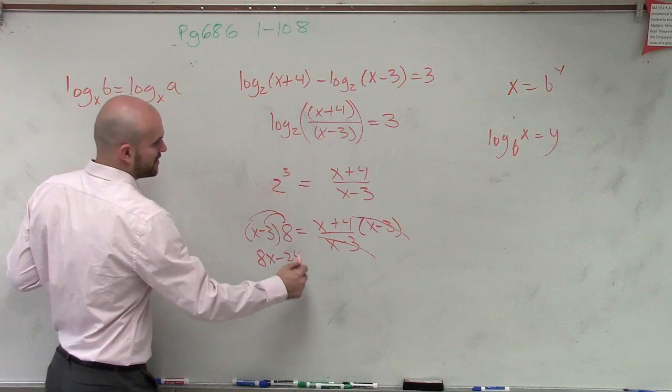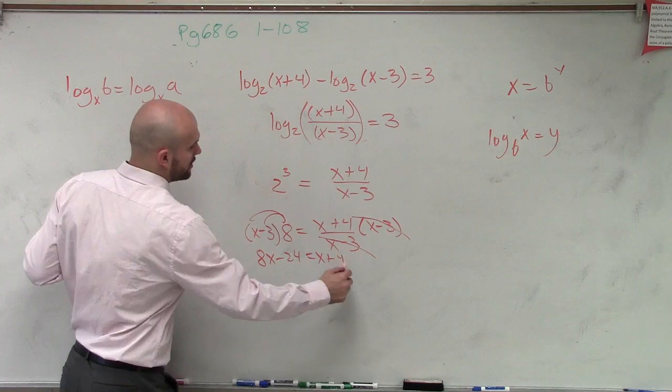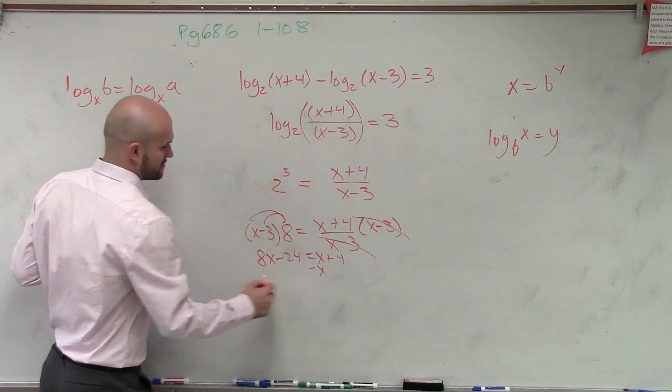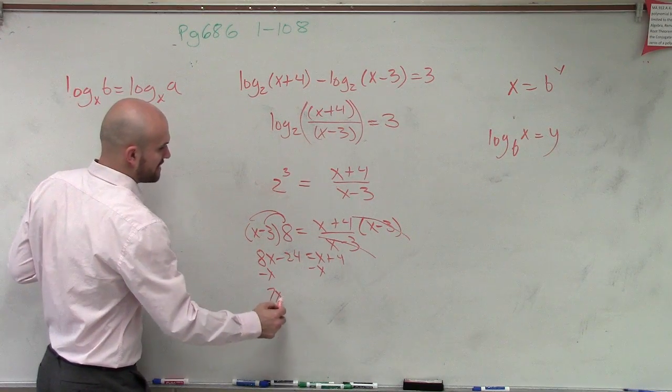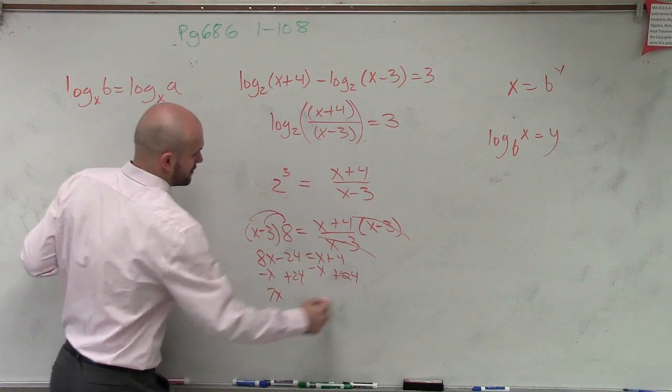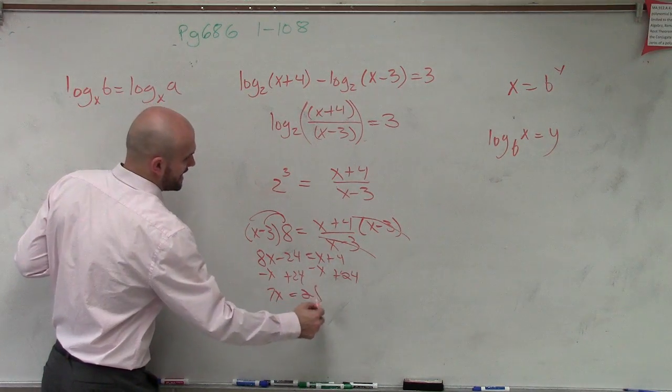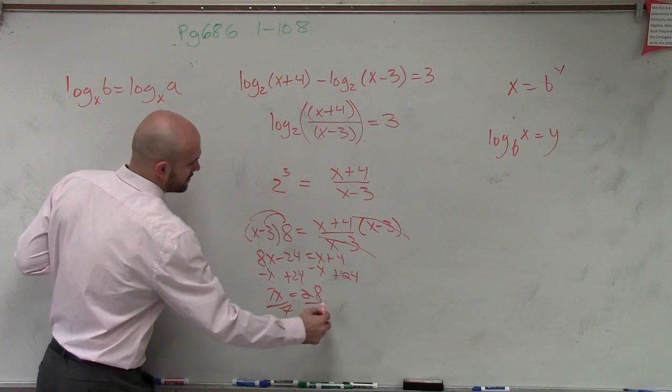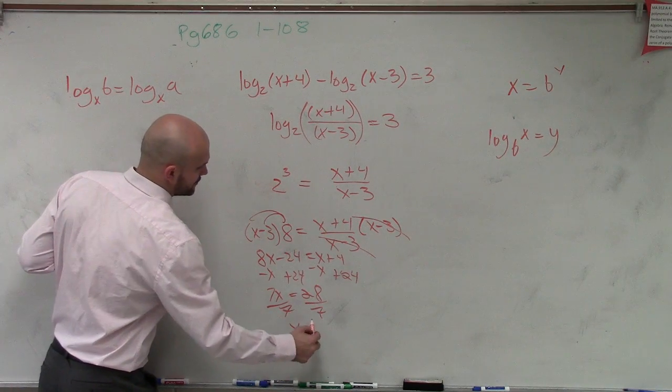So I get 8x minus 24 equals x plus 4. Subtract the x. 7x, add the 24. 7x equals 28. Divide by 7. Divide by 7. x equals 4.